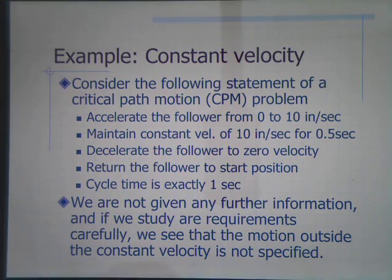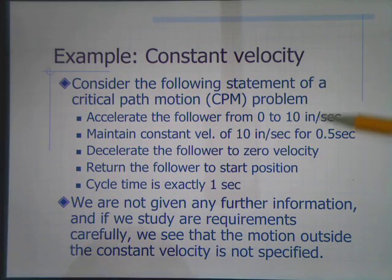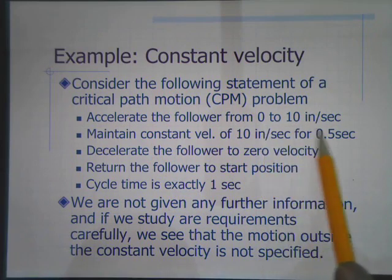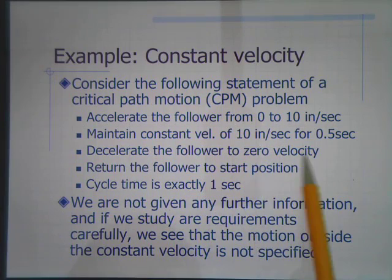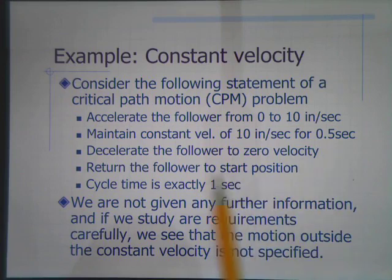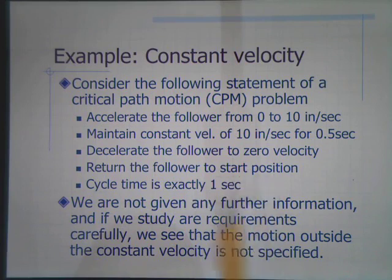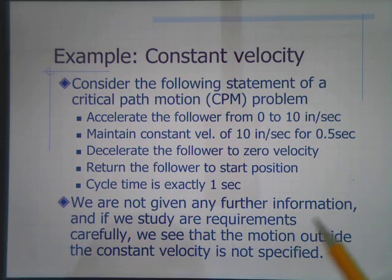We continue with the second iteration of our critical path cam design problem. We still have the same problem statement: we want to accelerate the follower from 0 to 10 inches per second, maintain a constant velocity of 10 inches per second for half a second, then decelerate the follower to zero velocity and return it to the start position. The cycle time is exactly one second. Previously we did this with four polynomials, and we're not given any further information.